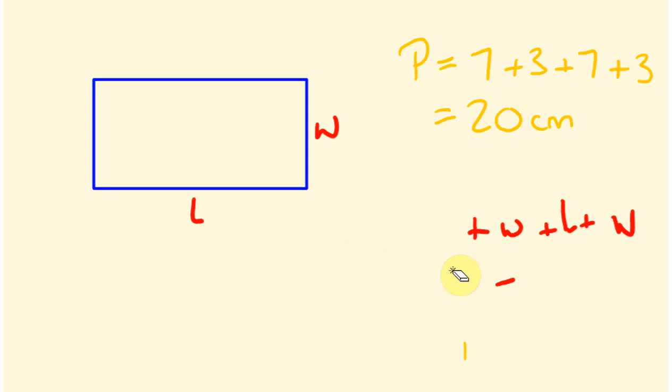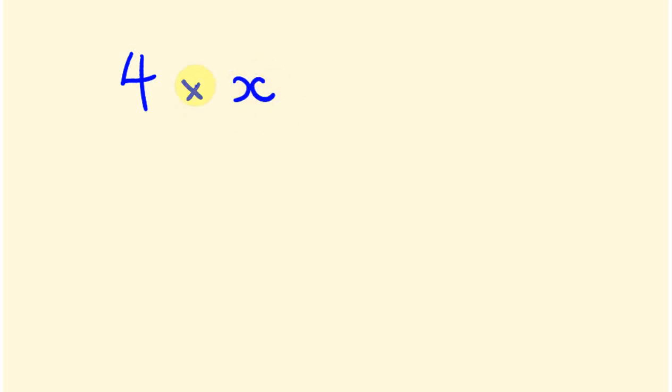From here we'll look at how to write and simplify algebraic expressions. Say I wanted to write 'four times a number' using algebra. We replace the word 'number' with x, so we have four times x. In algebra we don't bother writing the times sign — we just write 4x. So if you see 4x, it means 4 times a given number. If x equals 3, that's 12; if x equals 7, that's 28.